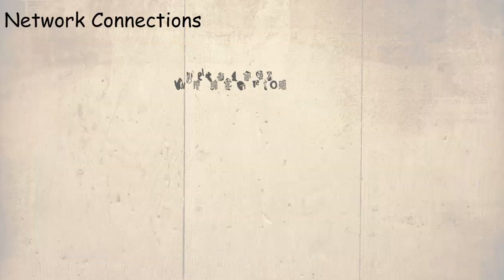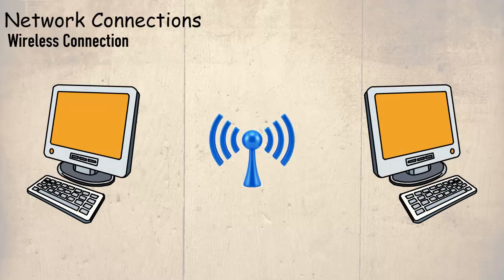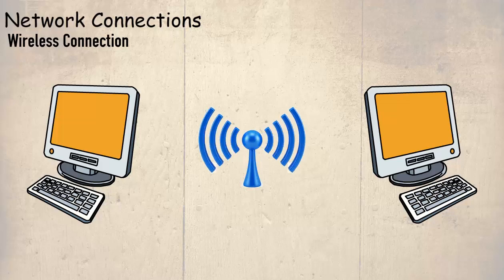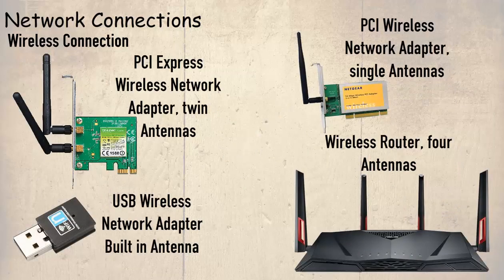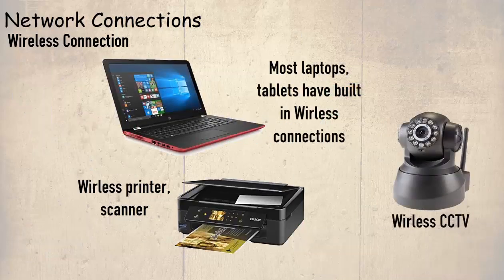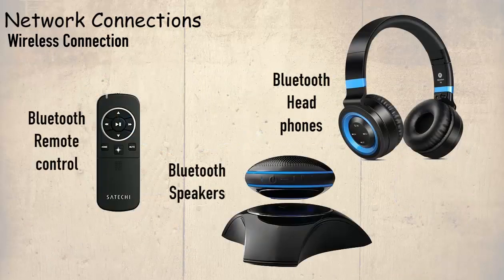Finally, there is the wireless connection. There is a tremendous advantage gained by wireless connections, and because of this it has become more and more popular to a point that it is just about the industry standard network connection. As the name suggests, a host on a wireless network does not need physical media to connect to the network. The host is attached to the wireless network interface, which can be internal or external. The interface will include some type of antenna that allows the host to transmit and receive information using radio waves. Some devices such as printers, laptops, and even CCTV have built-in wireless adapters. Another type of wireless connection is Bluetooth, which can be found in many other devices such as headphones, speakers, and remote controls.